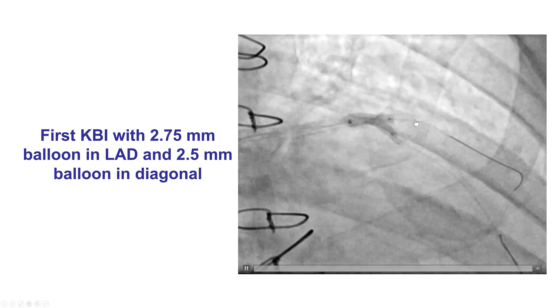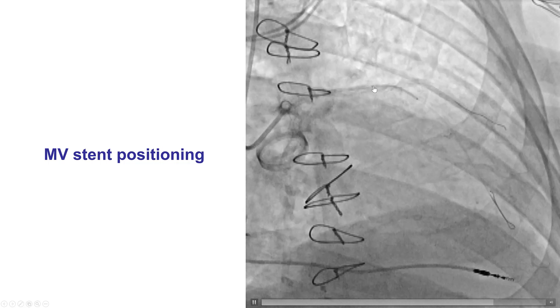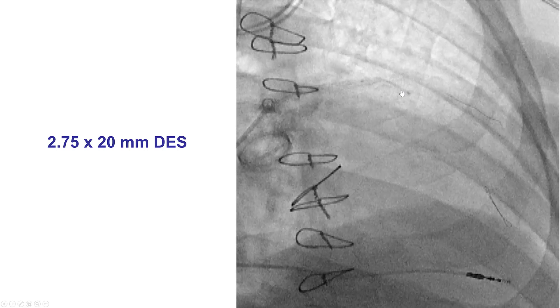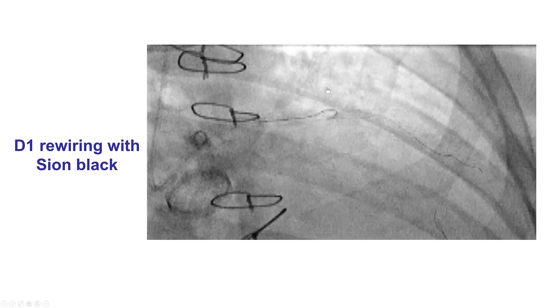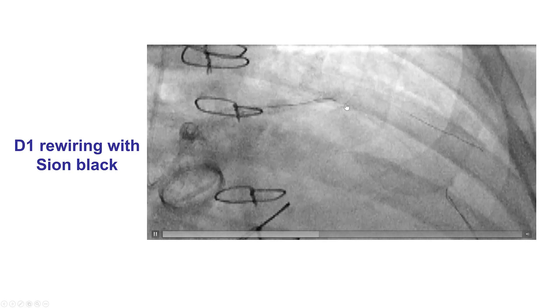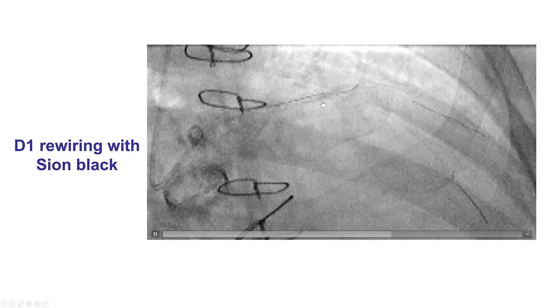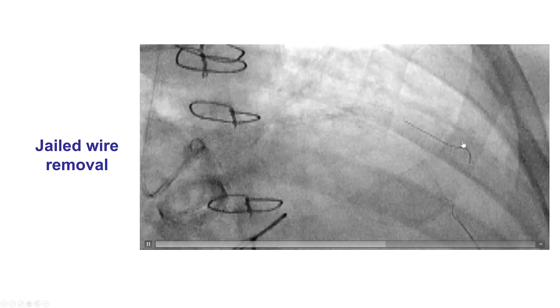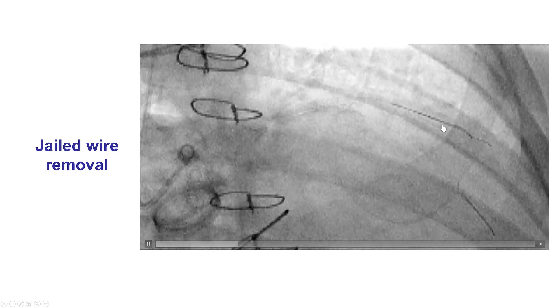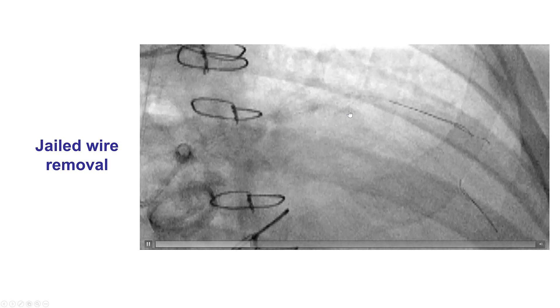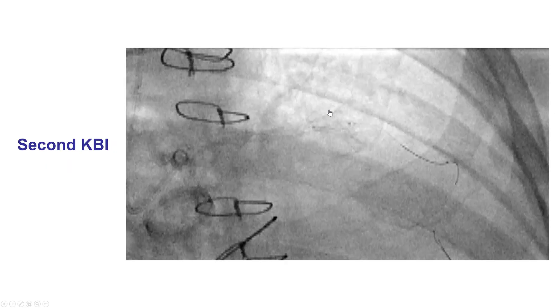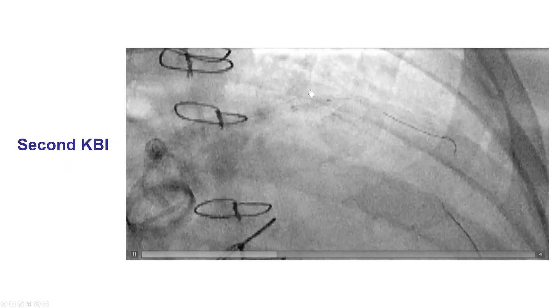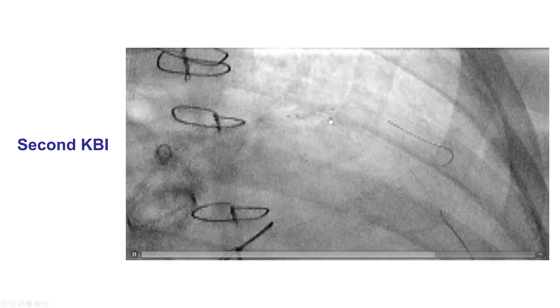After this, the first kissing balloon inflation was performed, followed by insertion of a stent into the main vessel — the LAD. The stent was positioned and deployed, followed by the proximal optimization technique with a short balloon, and then the second kissing inflation, which requires rewiring. A useful tip is to first try using a knuckle of the wire to avoid getting under the stent struts. The Xeon Black once again successfully recrossed into the diagonal branch. Many operators prefer not to leave the wire jailed after the side branch stent is placed; however, in our practice we do this routinely and have not had issues. The jailed wire was removed and then the second kissing balloon inflation was performed, which was easier for both the main vessel and the diagonal.